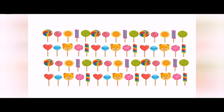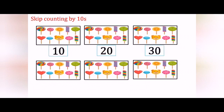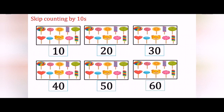Now look at this picture — there are so many candies together! Children, if I ask you to count these candies one by one, it will take a lot of time. So let's make sets of 10 candies and start counting by 10. We have 10 candies in one set. Let's start counting by 10s: 10, 20, then 20 plus 10 is 30, 40, 50 and 60. So the total number of candies is 60.